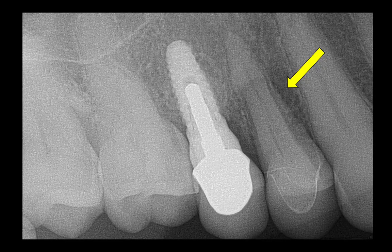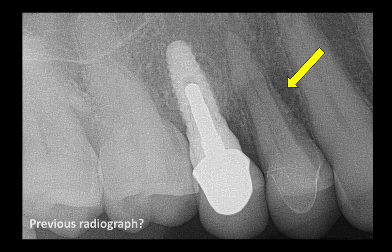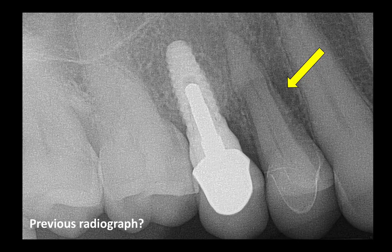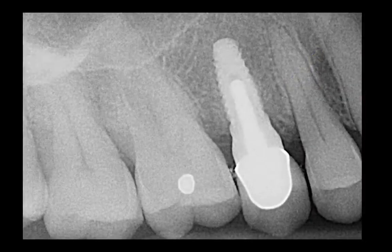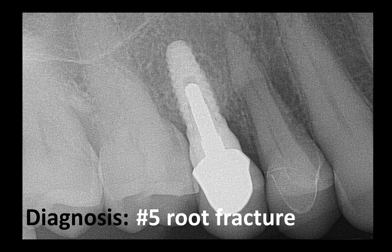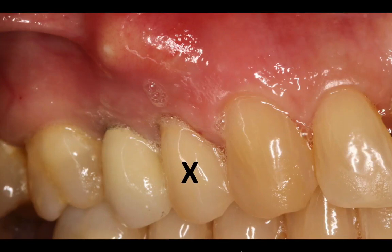Tooth number five has a radiolucency that seems to be increased on the mesial aspect, extending to the apical third, and perhaps a little on the distal as well. Under normal circumstances I would check for vitality, but with the severe mobility I decided to look at the previous radiograph of tooth number five, which showed a perfectly normal PDL. From what I gathered from the dentist, the tooth had a crack and was crowned. Considering the class 3 mobility, the radiolucency, the large periapical lesion, and the prior crack, my diagnosis is a root fracture — prognosis hopeless.